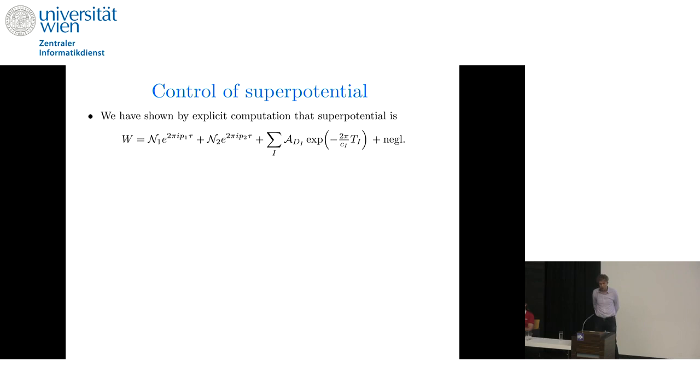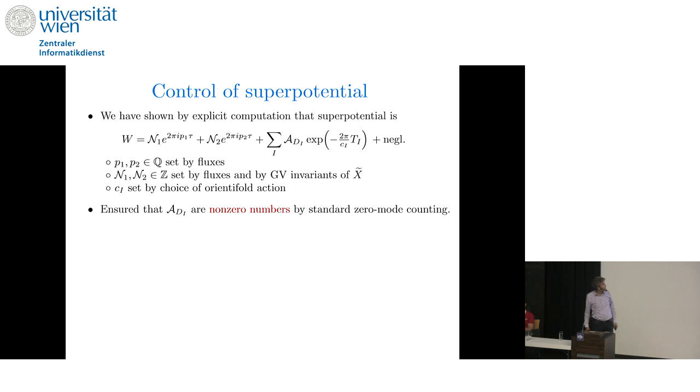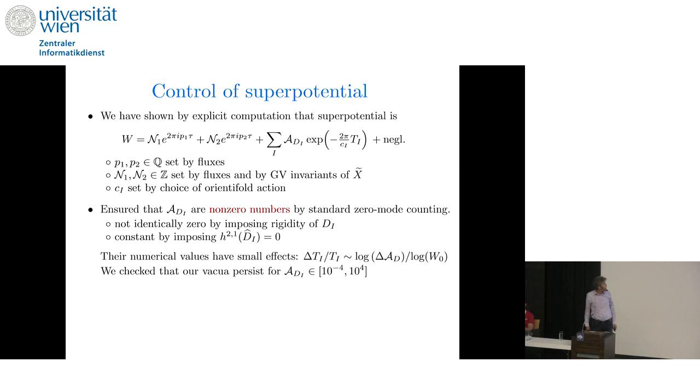So first, control of the superpotential. Well, here I'll be brief because it's just a recap of the talk so far. We've shown by explicit computation that the superpotential takes the form of two-term racetrack in the axio-dilaton plus a sum of instantonic terms from the prime toric divisors. Where the numbers here are set by choices of fluxes, by GV invariants, and by the orientifold action. We ensure that the Pfaffian pre-factors are non-zero numbers by standard zero-mode counting. Now, we don't know their numerical values. What we can check is that their numerical values have small effects. When W-naught is extremely small, only a very large change in the Pfaffians leads to a large shift in the moduli vevs. So you know, explicitly, if you put in 10 to the minus 4, 10 to the 4, nothing changes at all. You get undetectable shifts in our moduli vevs, the vacuum still exists. But it would be nice to know these values.